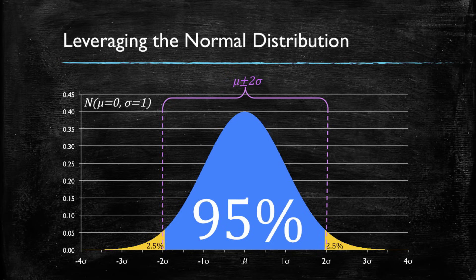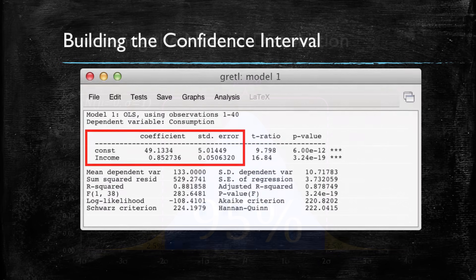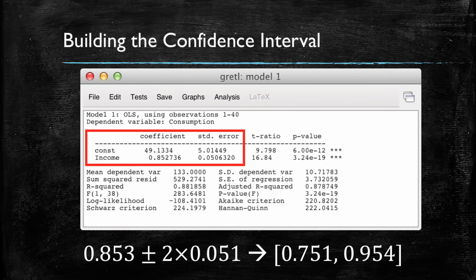When working with regressions, we don't have a standard normal distribution or standard deviations — instead we have the student t-distribution and we estimate standard errors. However, the mechanics for computing intervals are the same. Going back to our results from the statistical package Gretel, in addition to our coefficients we have standard errors right beside them. We focus on the standard error for the income coefficient, the slope. Our coefficient is rounded to 0.853, and we add and subtract two times the standard error of 0.051, giving a range from 0.751 to 0.954.